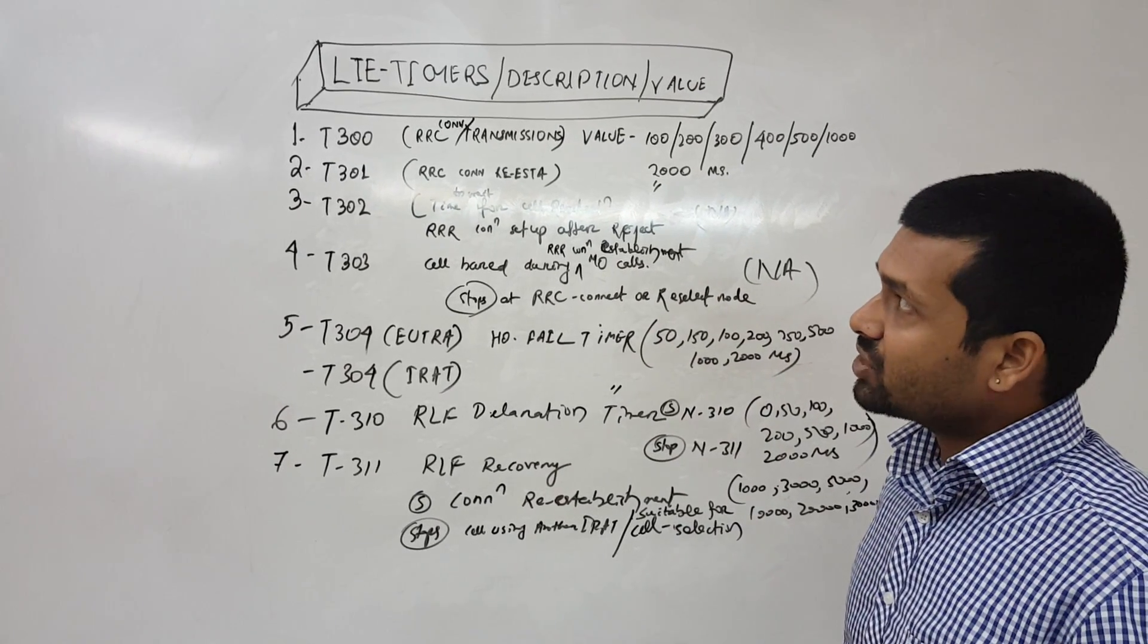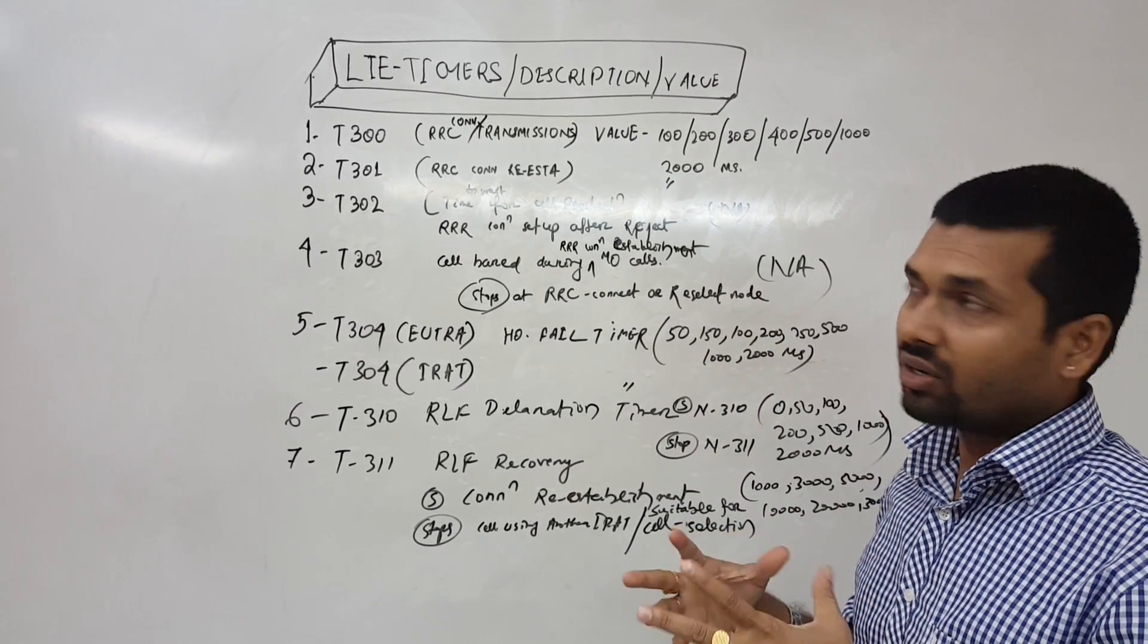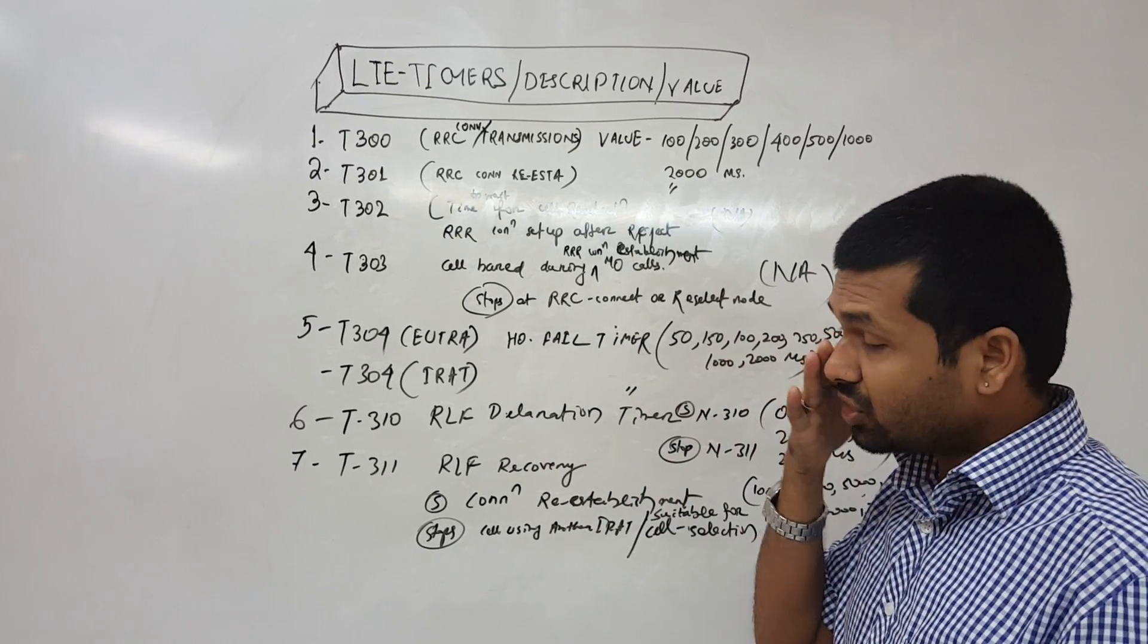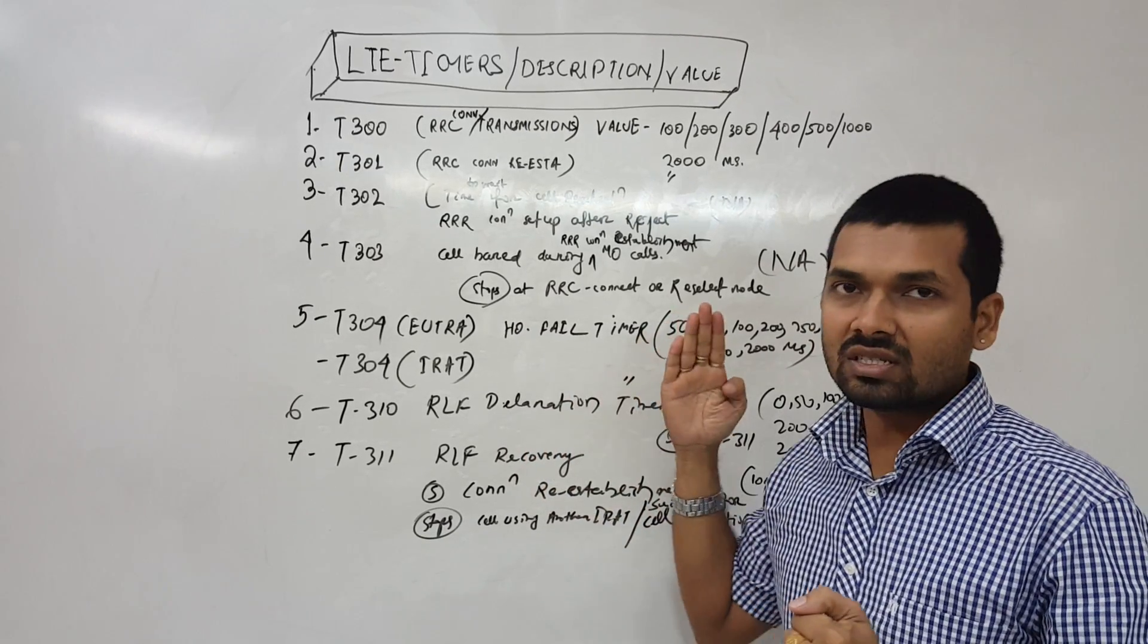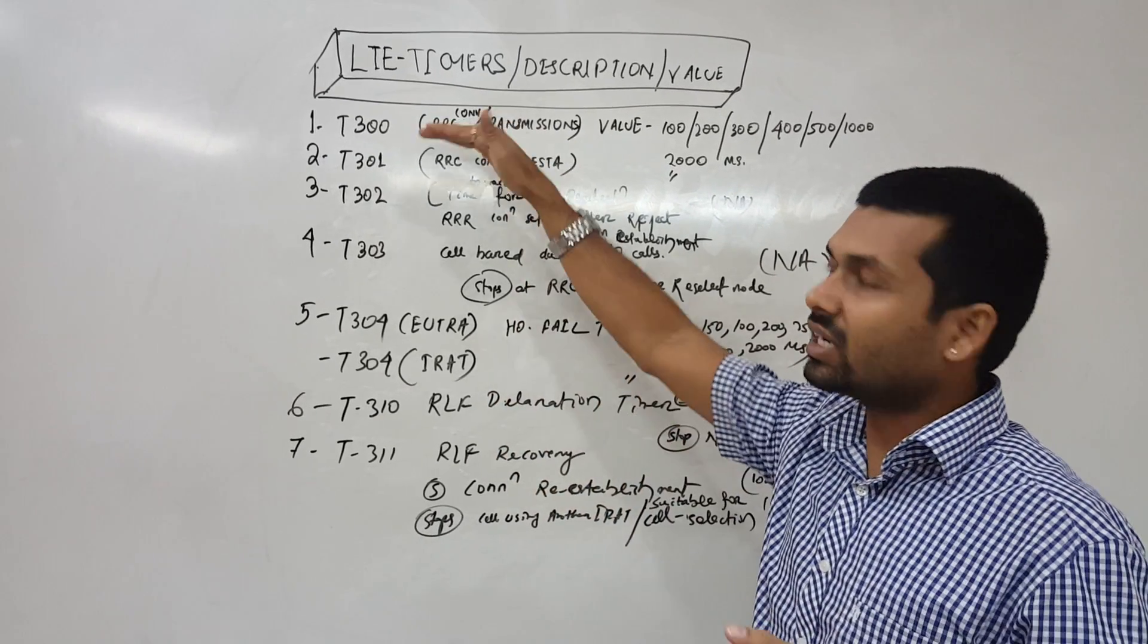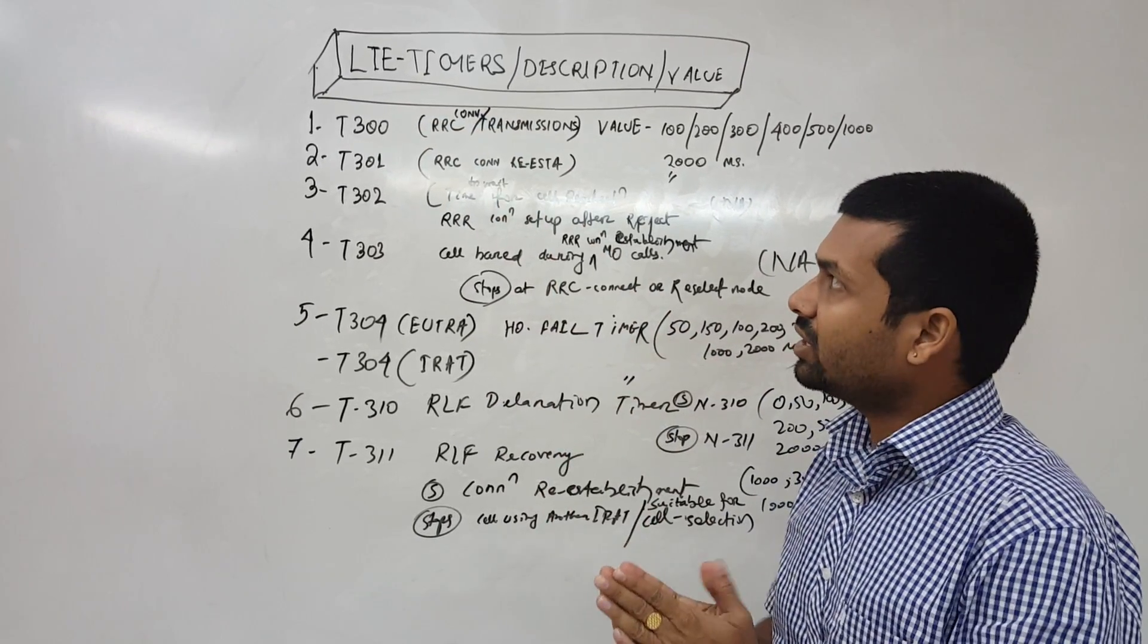T300 is when we start or request RRC connection and when we receive RRC setup confirmation or the reject confirmation. That is this timer, T300.